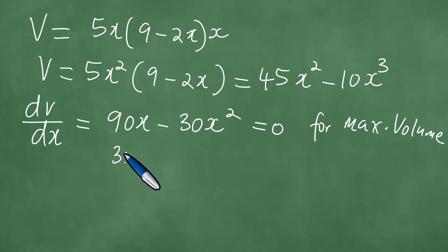We then have 30x times (3 minus x) equals 0, so x equals 0 or x equals 3.